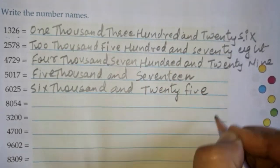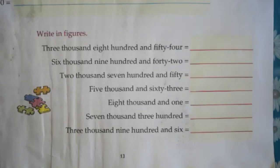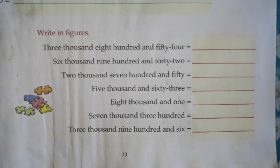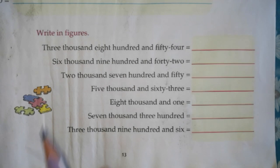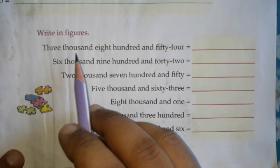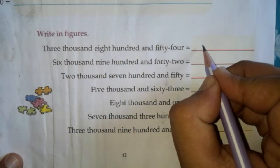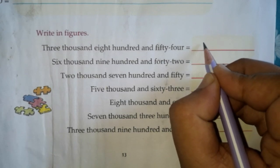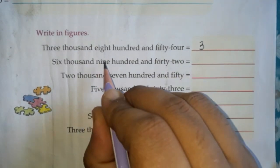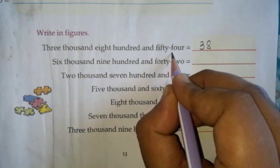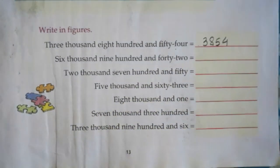Like this, all the questions will be solved. The next question is write in figures — now the names are given and we have to write them in figures. The first question is three thousand eight hundred and fifty-four. The thousands place is always the fourth place: 3, eight hundred is the third place, and fifty-four.